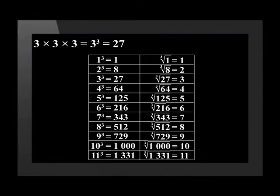A perfect cubed number is an integer that is multiplied by itself twice. For example, 3 times 3 times 3 is equal to 27. When we find the cube root of a perfect cubed number, the answer will be an integer.